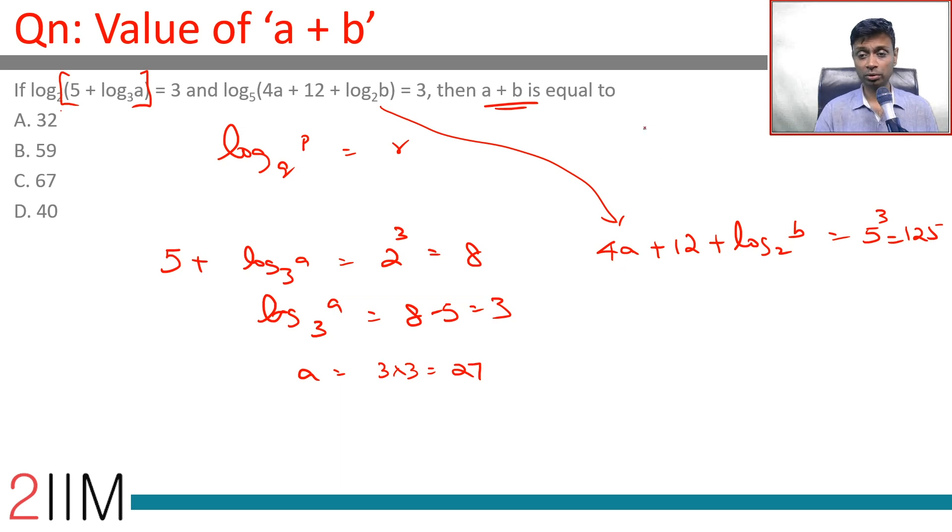4a is 27 into 4. 27 into 4 is 108. 108 plus 12 is 120 plus log b to the base 2 is 125.